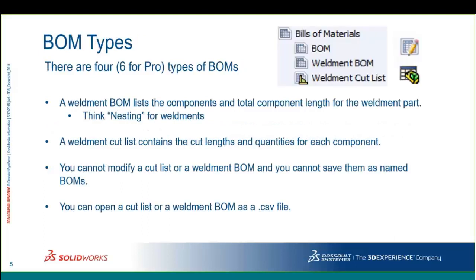Let's talk about the bill of materials types. There are several BOM types that PDM supports — four types supported by Standard and six by Professional. You can tell them apart by their icons. The top icon, what many call a calculated bill of materials, is built automatically by PDM every time you check in a file with references. So PDM tells you exactly what's inside that bill of materials. You do have the ability to take that bill of materials and modify it, converting it into a named bill of materials, shown by a different icon — but named bill of materials are Pro only.